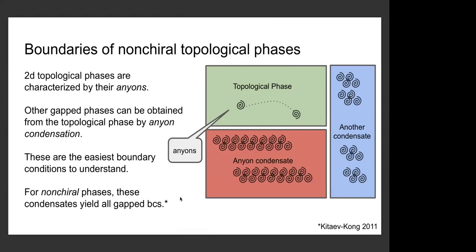Topological phases are traditionally understood in terms of their anyons — quasi-particles with interesting braiding and fusion rules. If you have a description in terms of anyons, you can think about anyon condensates. We can imagine other gapped phases obtained from this topological phase by taking one anyon and giving it a VEV. That would confine anyons that braid with this one, while anyons in the condensate become trivial. This yields a boundary condition of the topological phase where the anyons in the condensate are condensed on the boundary. For nonchiral phases, these anyon condensates describe all of the boundary conditions — there's already a complete theory of gapped boundaries of topological phases.